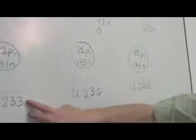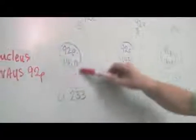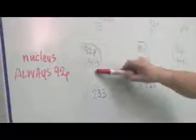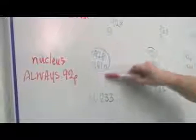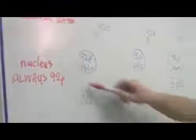This one's called uranium-two-three-three. And obviously, if you look at these numbers, they add up to two hundred and thirty-three. That is two hundred and thirty-three particles, protons and neutrons, in the nucleus.